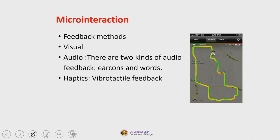What are the various feedback methods? There are ideally three feedback methods. It can be visual feedback. It can be audio feedback — in audio feedback we have two different modes: one is called earcons and the other is words. Icons are visible in nature, you can see through the eye. Earcons are through sound — you perceive sound through the ear, therefore they are called earcons. Words means spoken words which you can hear and comprehend the meaning. Haptics means vibro-tactile feedback — there are motors which vibrate and the nature of that vibration communicates the message as a feedback means.